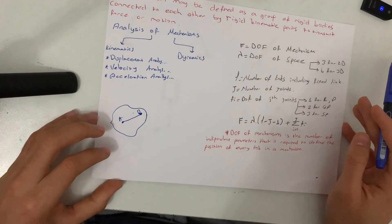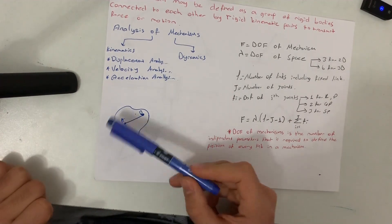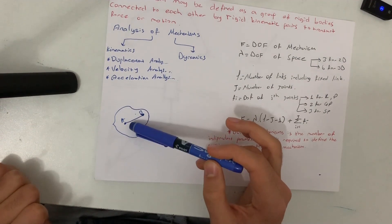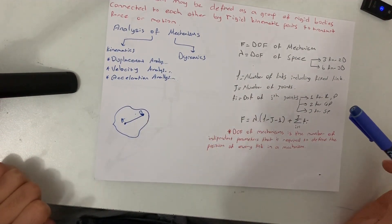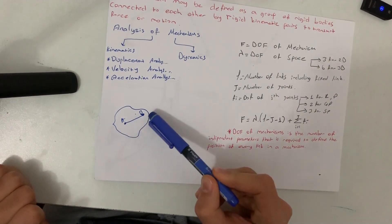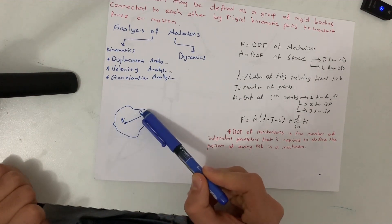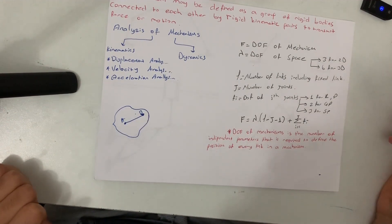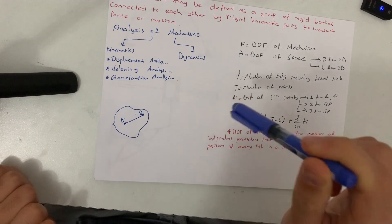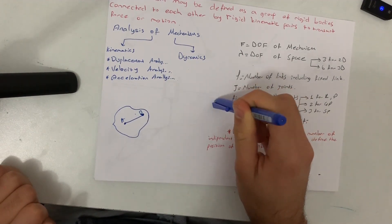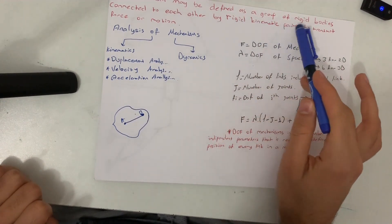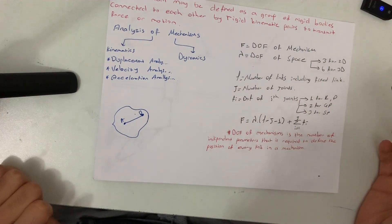I want to define a rigid body. If a body does not have a changeable shape, it is a rigid body. For example, if point A and point B exist on a body and the distance between them does not change over time, then that body is a rigid body. In the study of mechanisms, we will always work with rigid bodies and rigid kinematic pairs.